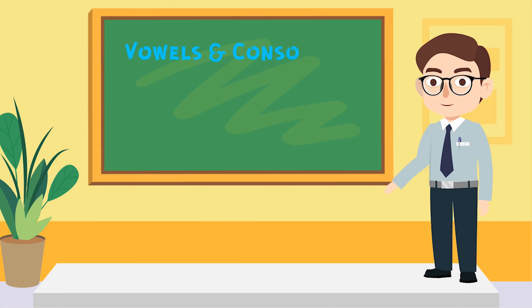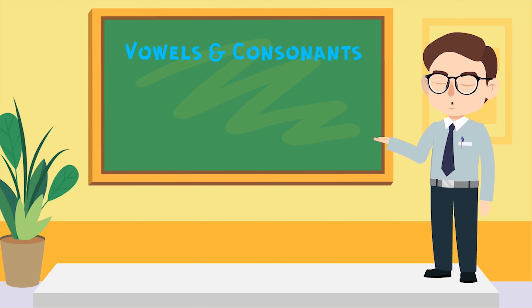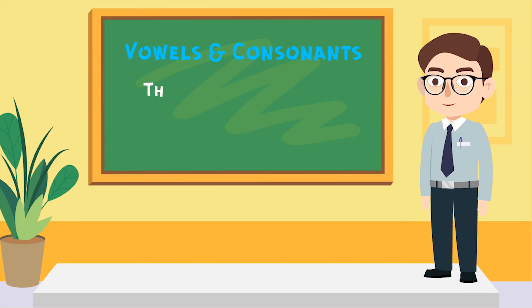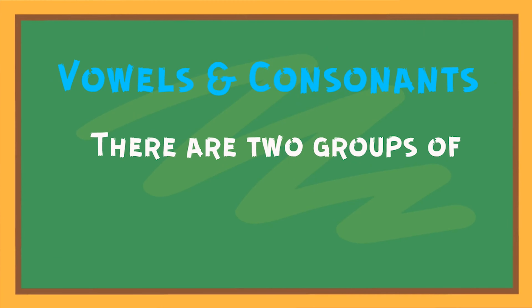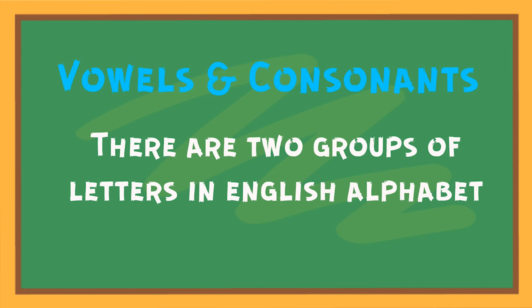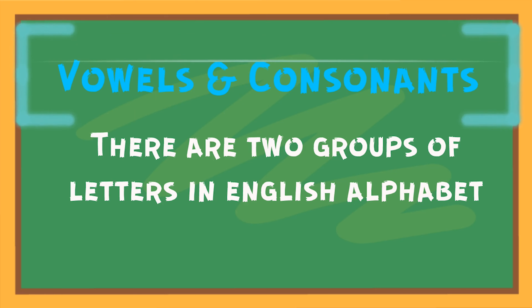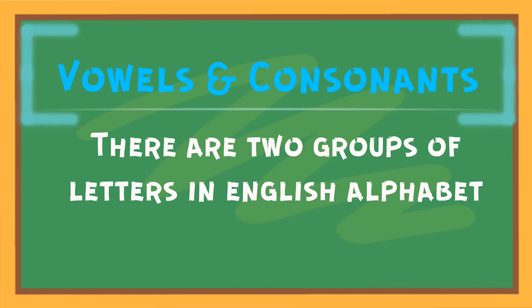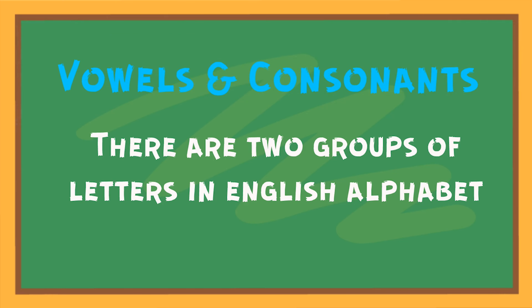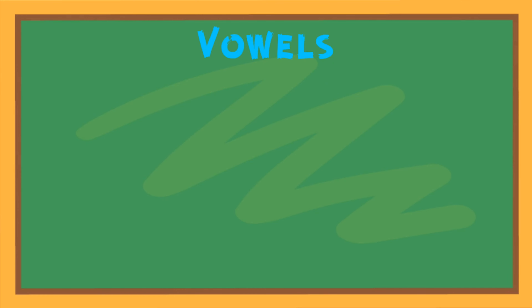Vowels and consonants. There are two groups of letters in the English alphabet: the vowels and the consonants. Vowels: A E I O U.